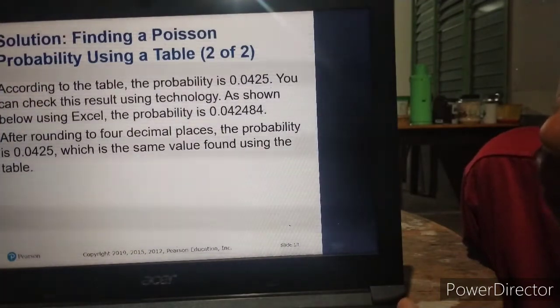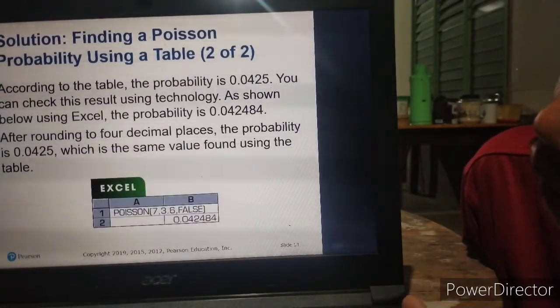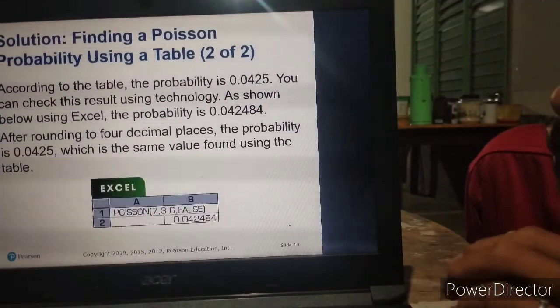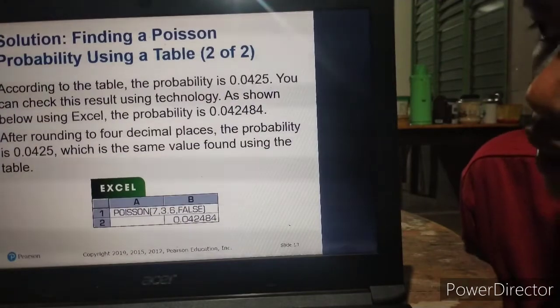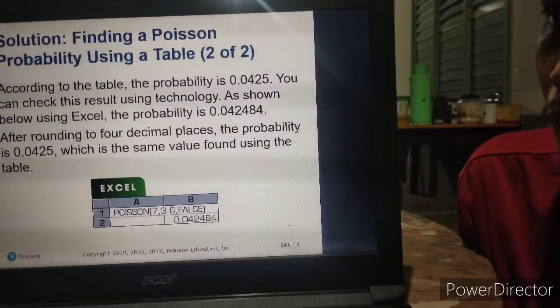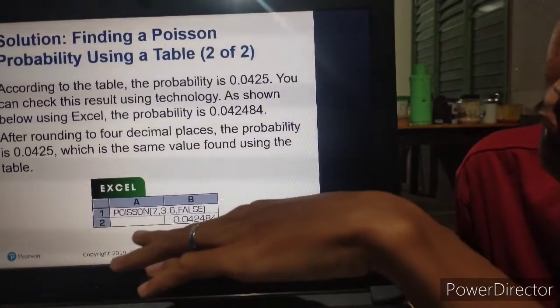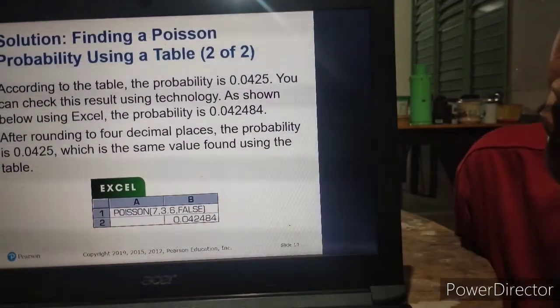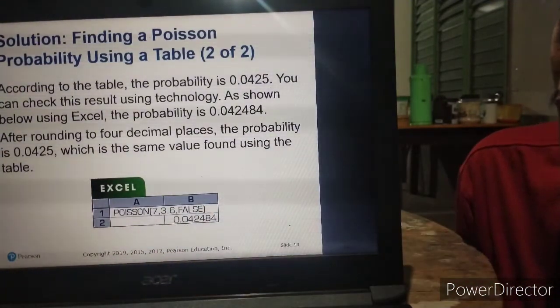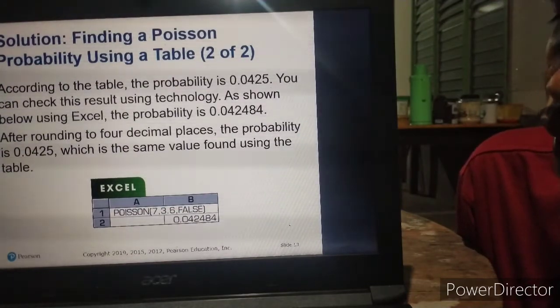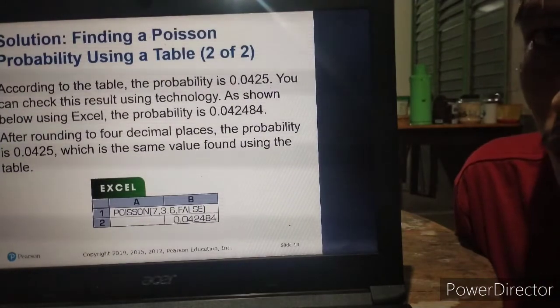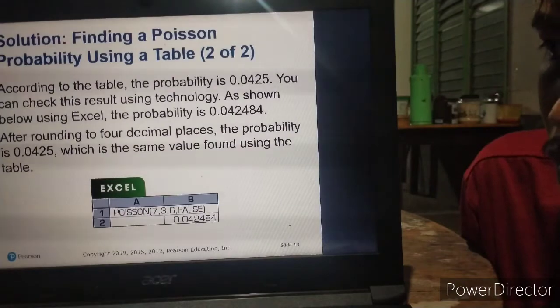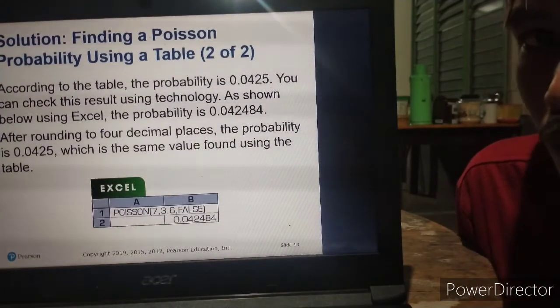According to the table, the probability is 0.0425. You can check this result using technology as shown below using Excel. Using Excel, the probability is 0.042484. After rounding to four decimal places, the probability is 0.0425, which is the same value found using the table.